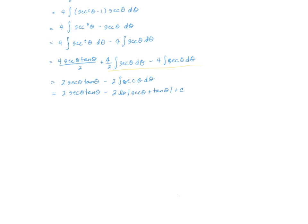So secant is the reciprocal of cosine. If cosine is adjacent over hypotenuse, secant is hypotenuse over adjacent. So it's going to be two times the hypotenuse — square root of four plus x squared — over the adjacent to the angle, which is two, times tangent, that was x over two, minus two times the natural log of the absolute value of the square root of four plus x squared over two, plus tangent, that would be x over two.